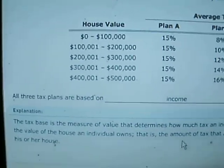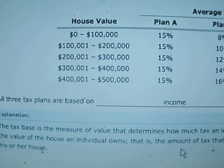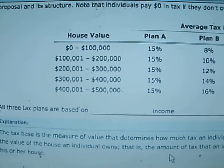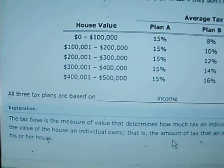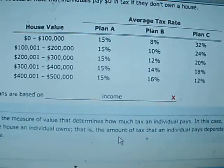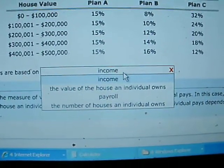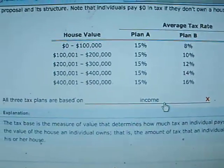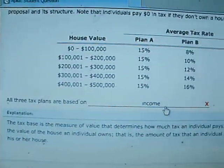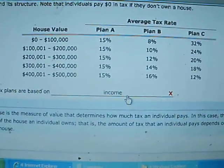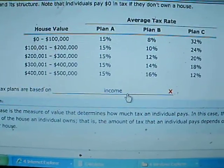Back on Aplia, all three tax plans. If even one of them was not based on value of house, then I could not put value of house. We've established now that Plan A is based on income.